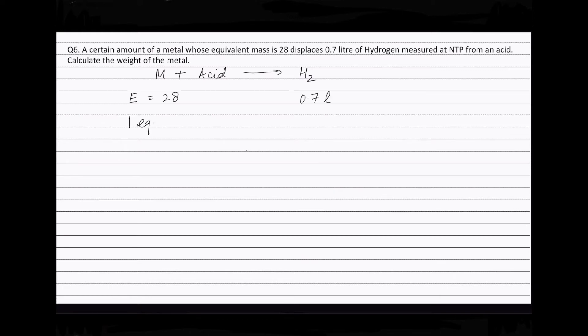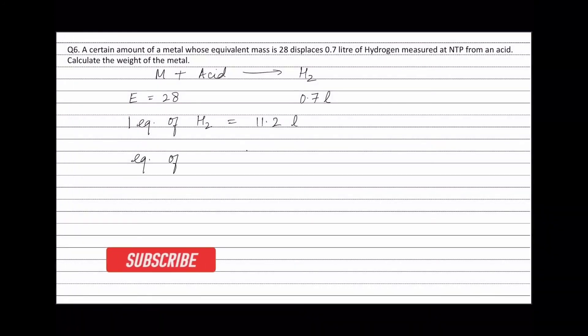Now one equivalent of hydrogen is equal to 11.2 liters. Now equivalence of metal is equal to equivalence of hydrogen.